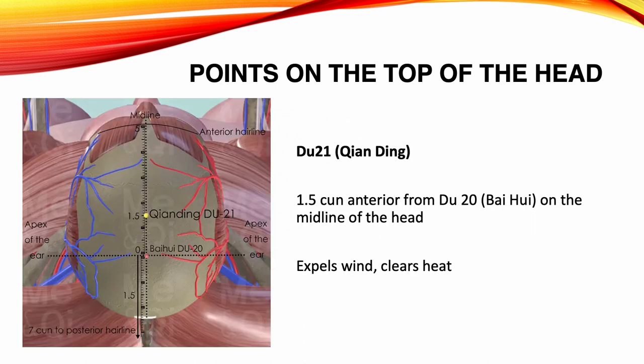Du 21, Chian Ting. Location: 1.5 Sun anterior from Du 20, on the midline of the head. Functions: expels wind, clears heat. Indications: headache, dizziness, nasal congestion, seizures, hysteria, insomnia, convulsions in children, edema.